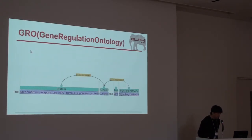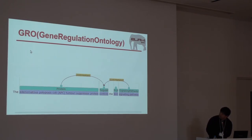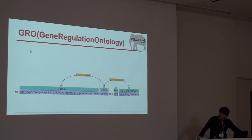Here is another example of an annotation produced by EBI and a Singapore group. This annotation was produced based on gene regulation ontology. So these two annotations — the NCBI disease annotation and the GRO annotation — are performed from different perspectives.